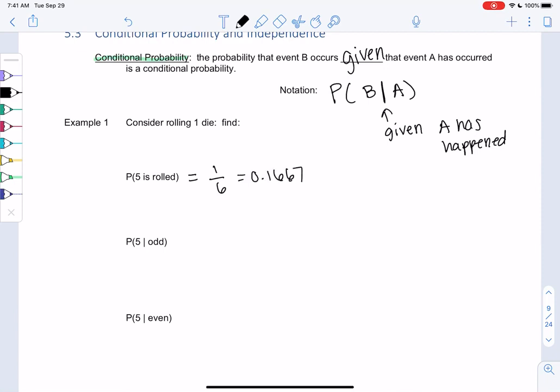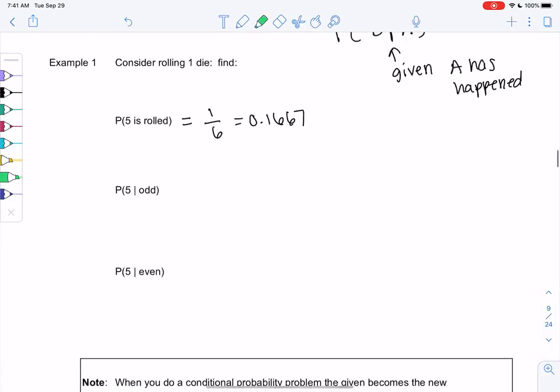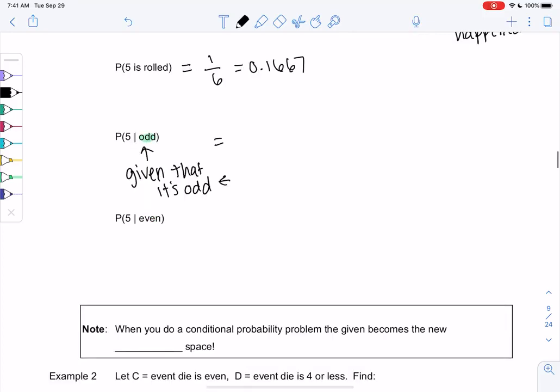So let's see how these givens change things. So the next one says, what's the probability of a 5 given that it's odd? So essentially what we're saying is we already know that we have an odd number. So we're not looking at 1 through 6 anymore. We're only looking at odd numbers, which means it's 1, 3, or 5. So there's only 3 numbers to pick from now.